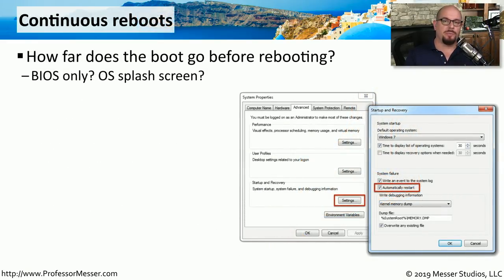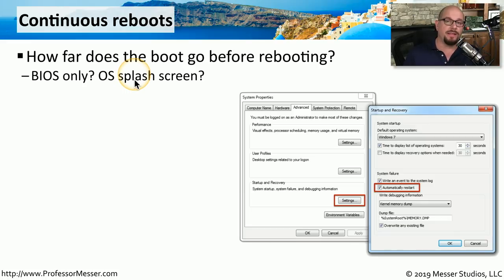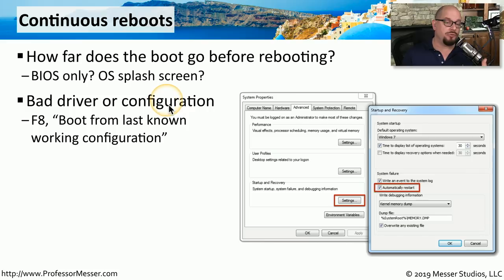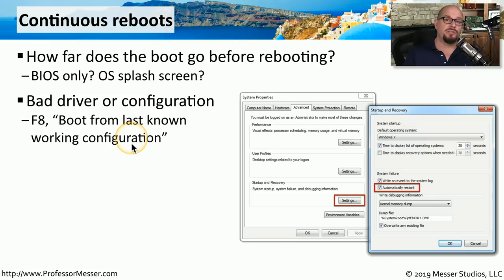Another challenging problem to troubleshoot is when your system is continually rebooting — it boots up, performs some type of startup process, and then begins rebooting all over again. You need to determine where this reboot process is occurring: are you getting a BIOS screen only, or do you get the operating system splash screen and then find the system is rebooting, or does it go all the way to the desktop? This might be caused by a bad driver or bad configuration. If you're running Windows, you can press F8 during the startup process and choose the option to boot from a last known working configuration, which will boot your system with the same configuration you had the last time you had a successful login.